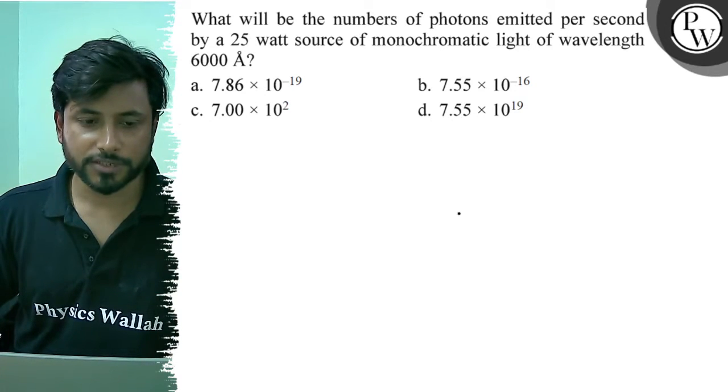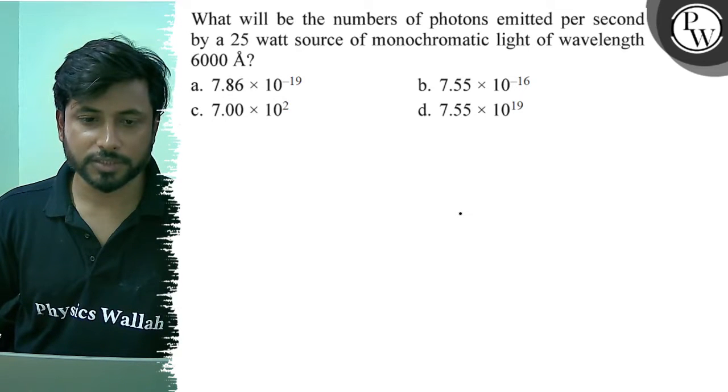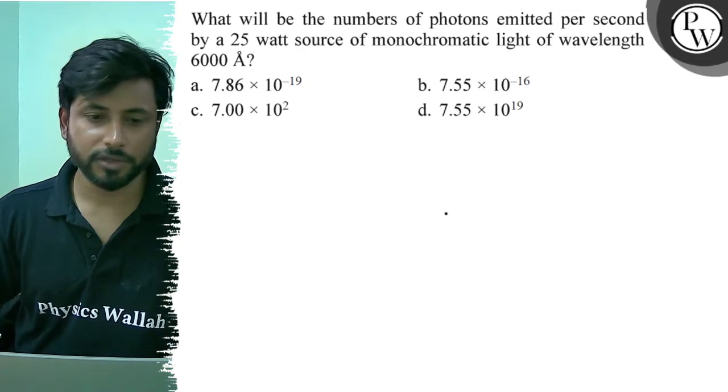Option A: 7.86 into 10 to the power minus 19. Option B: 7.55 into 10 to the power minus 16. Option C: 7 into 10 to the power 2. Option D: 7.55 into 10 to the power 19.